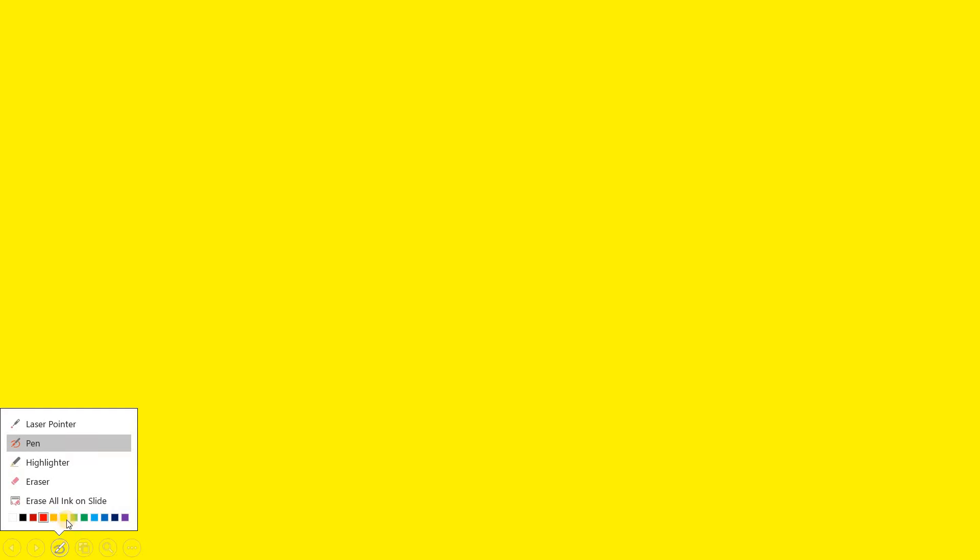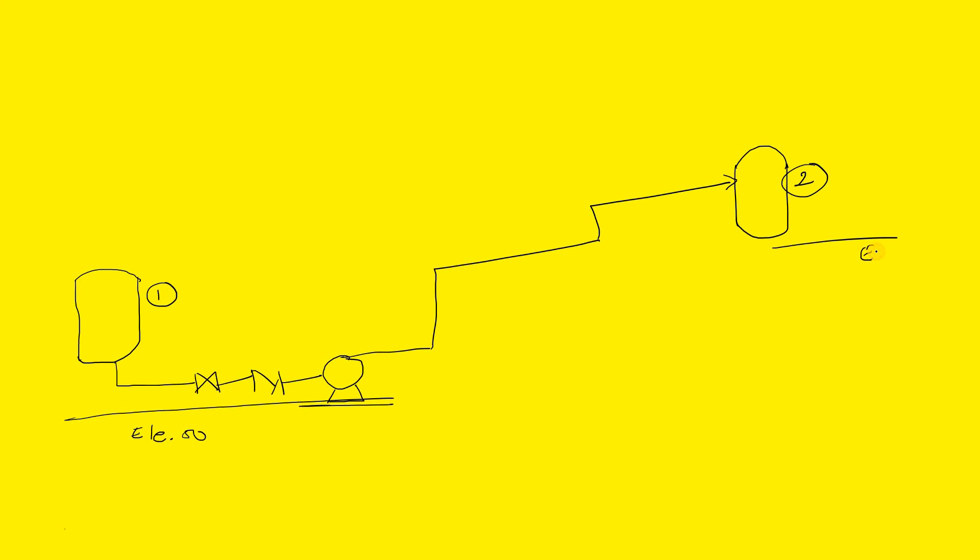So initially what we will do, we will consider one case. There is one vessel, and from this vessel there is a valve, then a strainer, and this is my pump. Here is another vessel where my fluid has to go. This is location 1 and this is location 2. Let's assume location 1 is at elevation 0 and location 2 is at some elevation in meters.